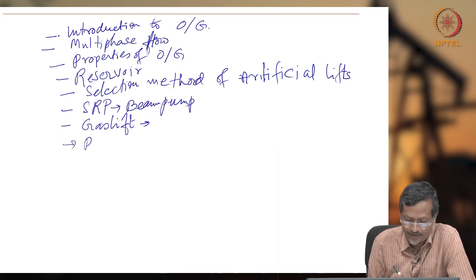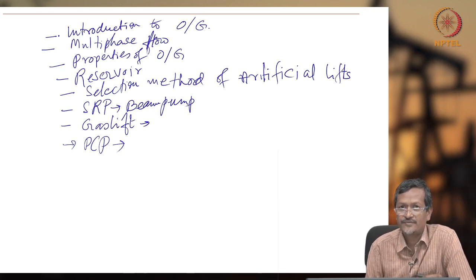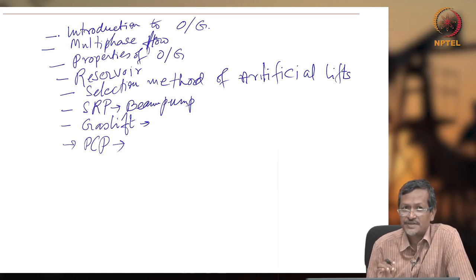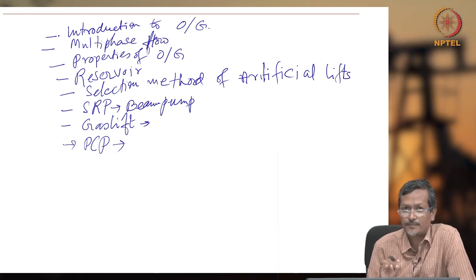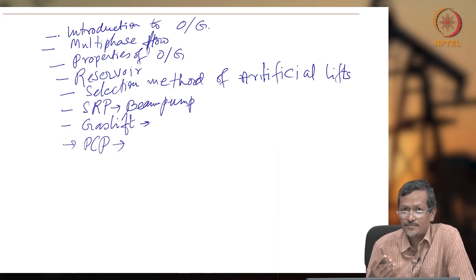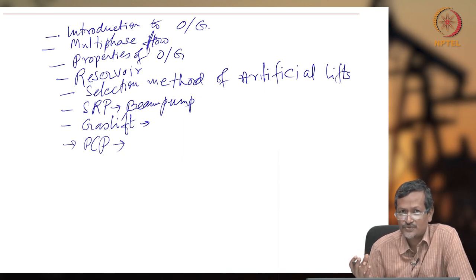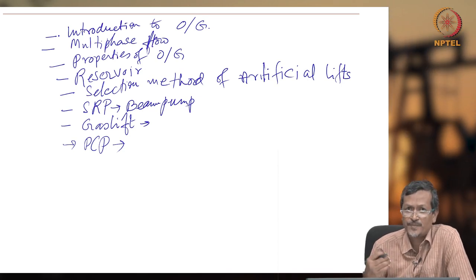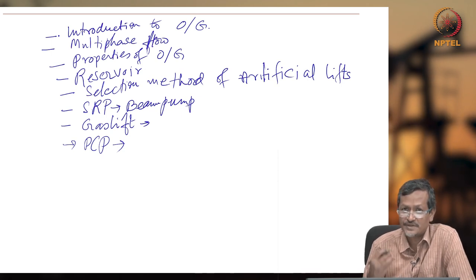Next is the progressive cavity pump, or PCP, which is used for high viscosity fluid pumping. There is a saying that the progressive cavity pump is a progressive thinking pump — when no other pump is working, you can use a PCP to lift fluid from the well bore. The fluid viscosity can range from 1 CP to 1000 CP, like grease or toothpaste. Food processing industries can also use this pump. It is a positive displacement pump; energy efficiency is lower, but it can handle very high viscosity fluid.